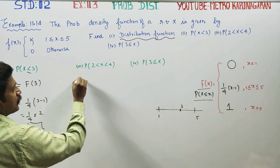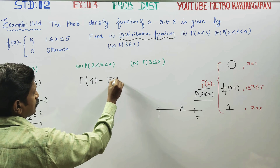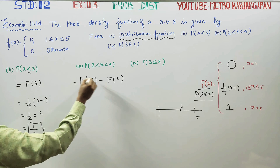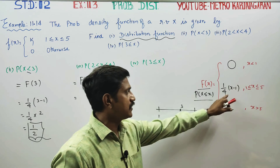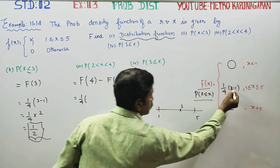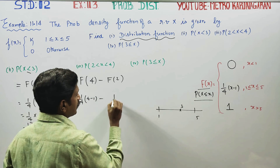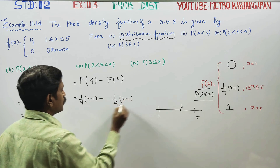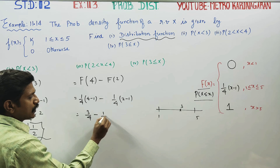For probability of 2 to 4: the formula is F of b minus F of a, which is F(4) minus F(2). This gives (1/4)(4 − 1) minus (1/4)(2 − 1) = 3 by 4 minus 1 by 4 = 1 by 2.